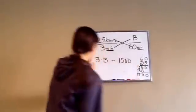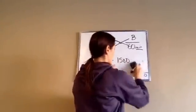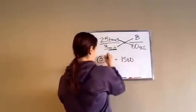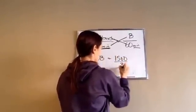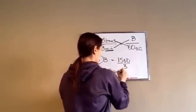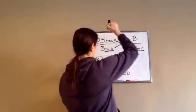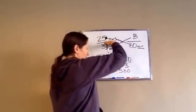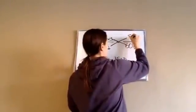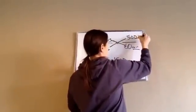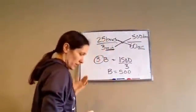Now, this is saying 3 times what equals 1,500. And so that's times 3. We're going to bring it across, and that's divided by 3. So then B equals 500. So if she does 25 bows in 3 minutes, then she can do 500 bows in 60 minutes or an hour.